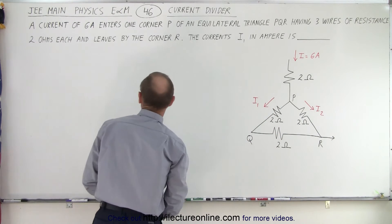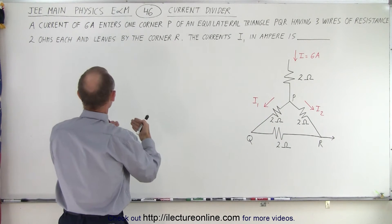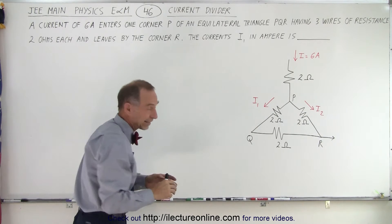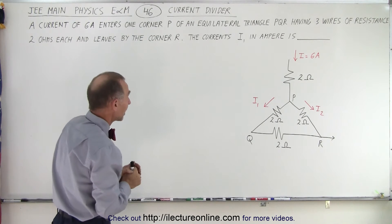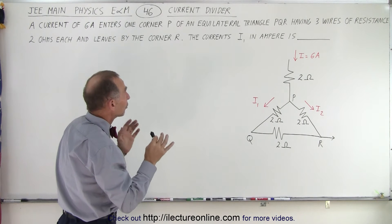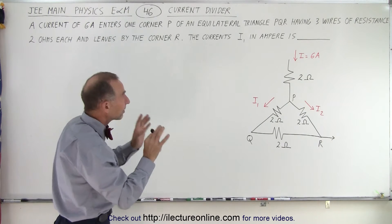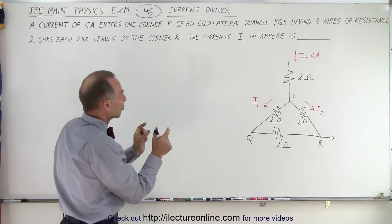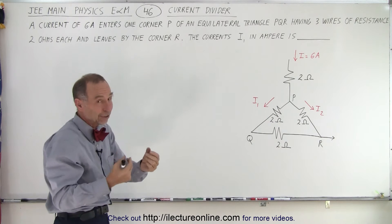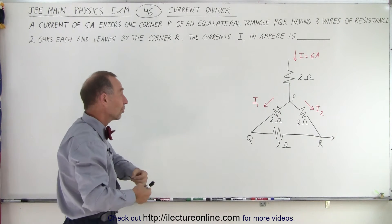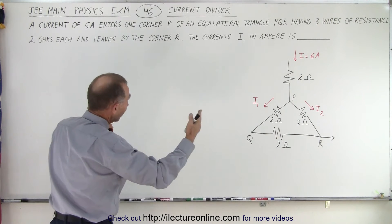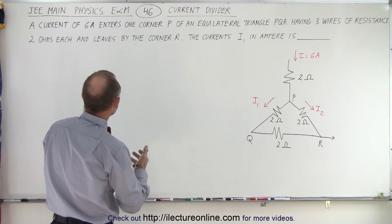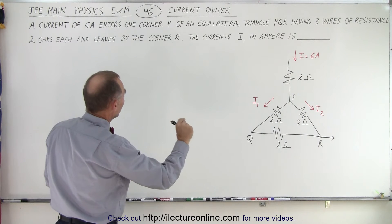Let's read the problem and see what it says. It says a current of 6 amps enters one corner P of an equilateral triangle. The fact that the triangle is equilateral doesn't really matter at first — PQR having three wires of resistance. Actually in this case it does matter: there are not actual resistors, we're measuring the resistance of the wires, which means the length of each wire should be exactly the same, so they'll have exactly the same resistance.